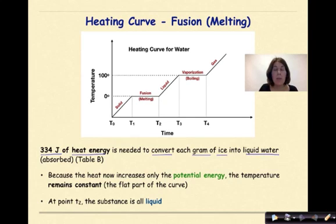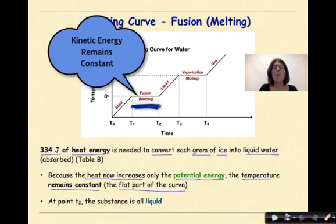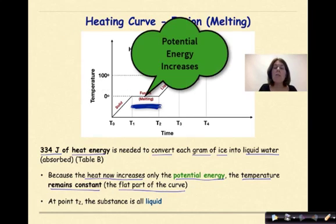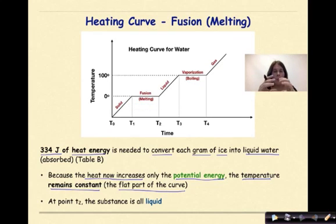In other words, it is being absorbed because this is an endothermic process. Because the heat now increases only the potential energy, the temperature remains constant, which is really important to notice. So from T1 to T2, we'll see that flat part of the curve. Flat part of the curve. And that flat part of the curve means that your kinetic energy, your temperature, is staying constant, but your potential energy is increasing because all that energy is going into breaking apart those water molecules, breaking apart those intermolecular forces.